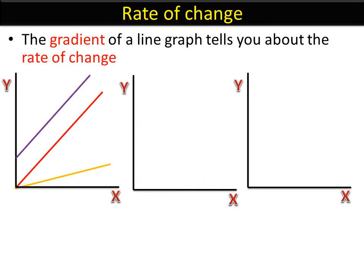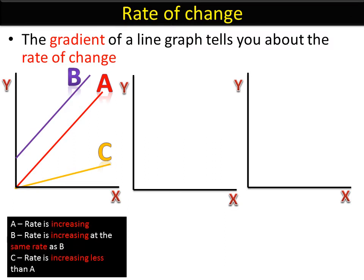This is also telling you about the rate of change but it's not directly proportional, but it has the same rate of change as line A. So A is increasing, the rate is increasing. As X increases, Y increases at a constant rate because the slope is a straight line. B is increasing at the same rate as A but is not directly proportional, and C is still directly proportional because it goes through the origin but it's increasing less.